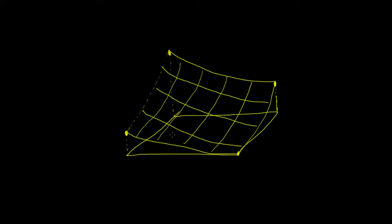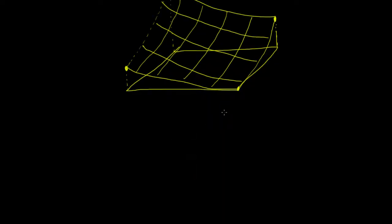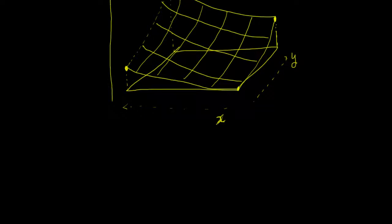You're going to have some surface that looks like that. Now if you give this a coordinate axis — call this direction x, that direction y, and up this way z — you can see this surface is z as some function of x and y.